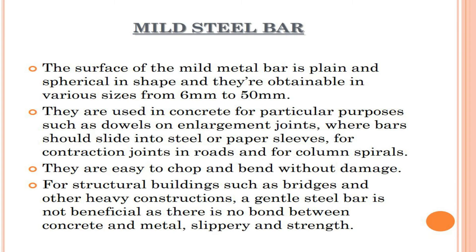Mild steel bar: the surface of the mild steel bar is plain and spherical in shape, and they are obtainable in various sizes from 6 mm to 50 mm. They are used in concrete for particular purposes such as dowels on expansion joints where bars should slide into steel or paper sleeves, for contraction joints and roads, and for column spirals. They are easy to cut and bend without damage. For structural buildings such as bridges and other heavy constructions, a mild steel bar is not beneficial as there is no bond between concrete and metal, making it slippery in strength.